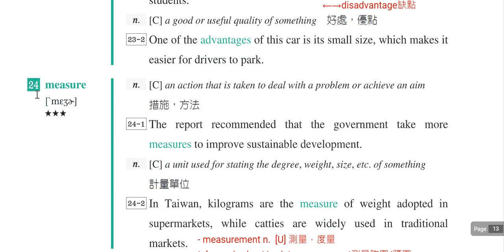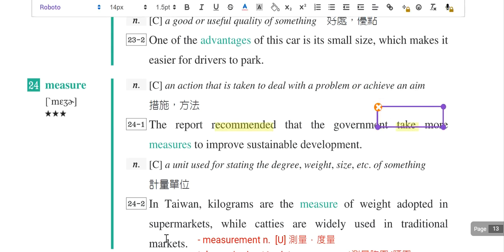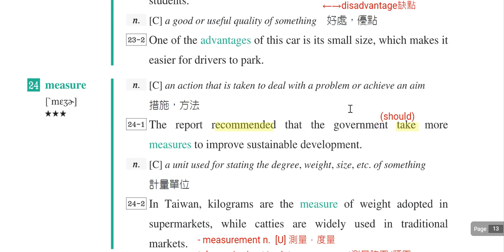第二十四个单字是measure，是措施或者是方法。例句：The report recommended that the government take more measures to improve sustainable development。要注意这个recommend后面子句里面用原型动词，因为语气强烈，其实是省略了should。采取什么样的方法就是take measures to do something。